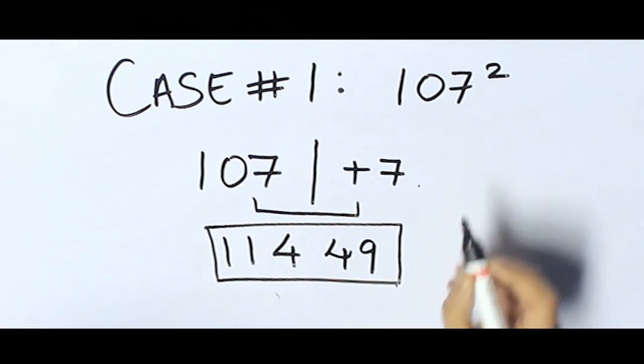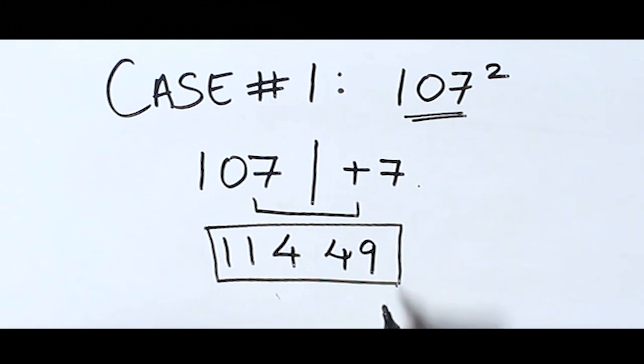The last two digits are obtained by the square of this number.